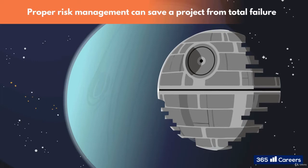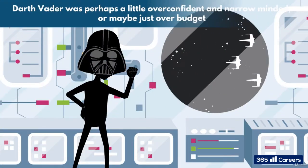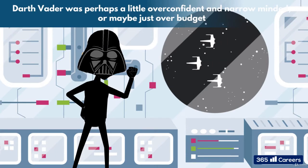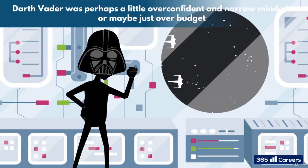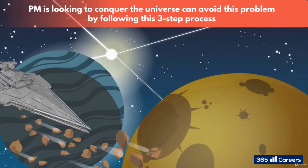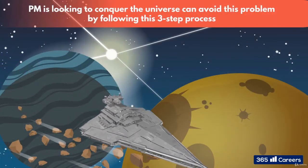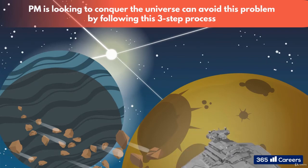Darth Vader was perhaps a little overconfident and narrow-minded by not putting a cover on the thermal exhaust port. Or maybe he was just over budget. For future generations, project managers looking to conquer the universe can avoid this problem by following this three-step process.